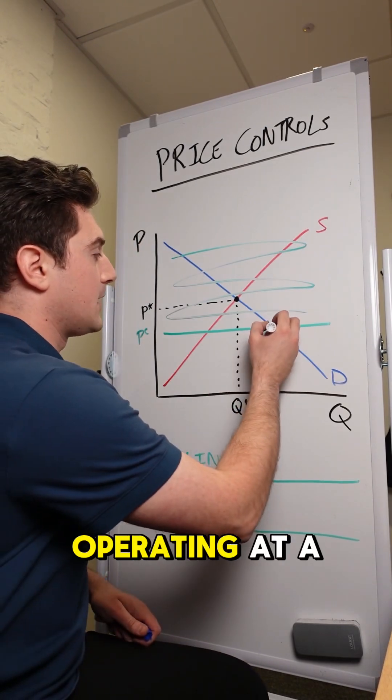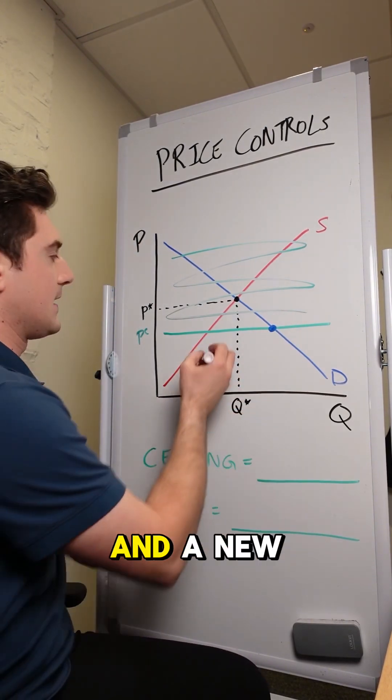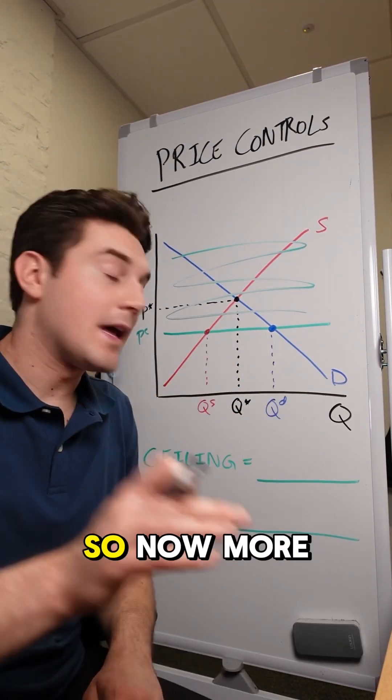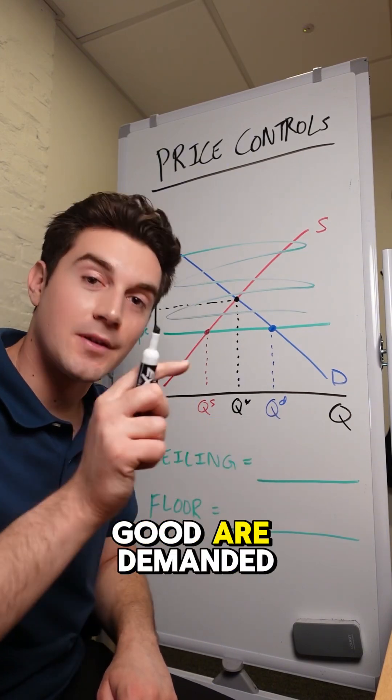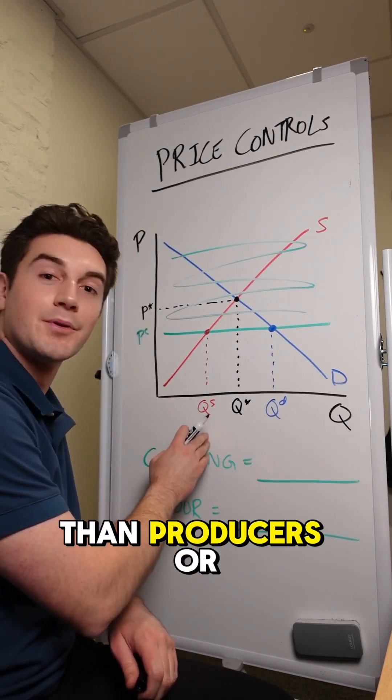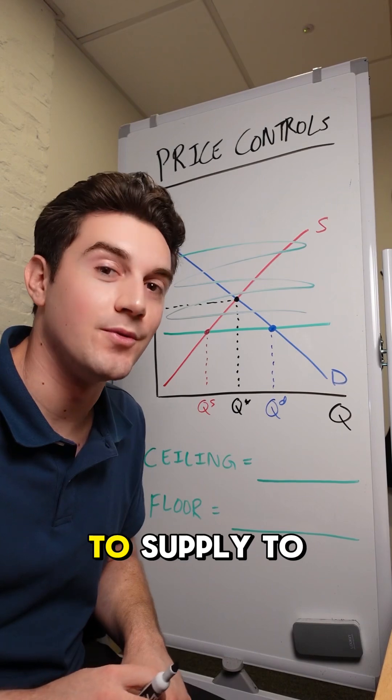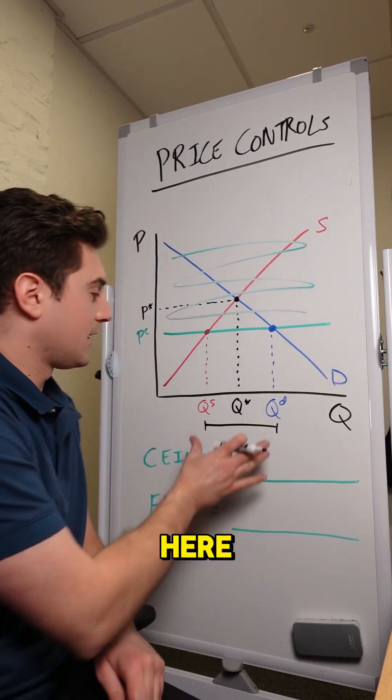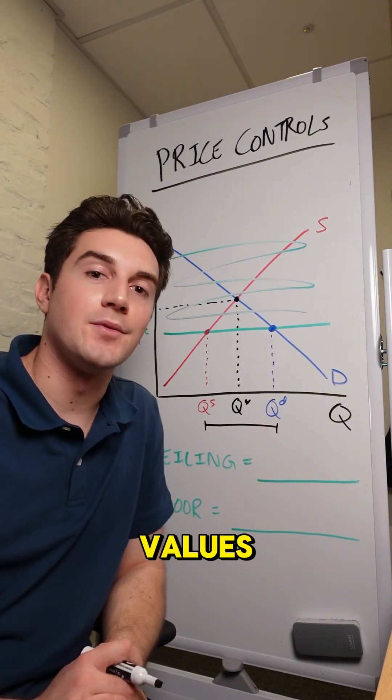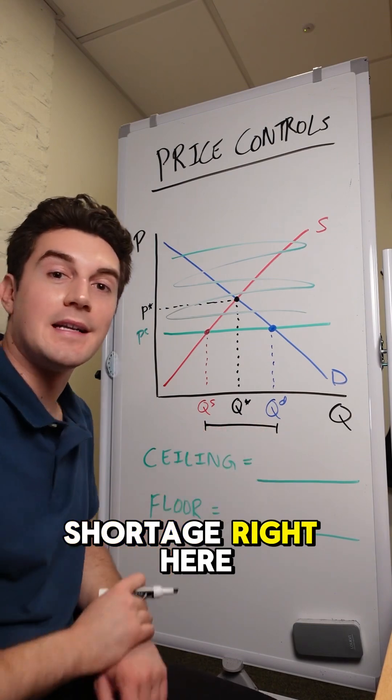What this means is that we will be operating at a new quantity demanded and a new quantity supplied. So now more units of this good are demanded by consumers than producers or suppliers are willing to supply to the market. What we need to focus on here is the difference between these two values resulting in this shortage right here in the market.